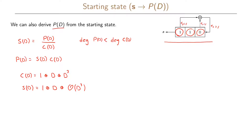Since we know that the degree of P(D) must be less than the degree of the connection polynomial, which is degree 3, our P(D) must be of degree 2 or less. So the higher-degree terms will not matter when we do our multiplication to find P(D).